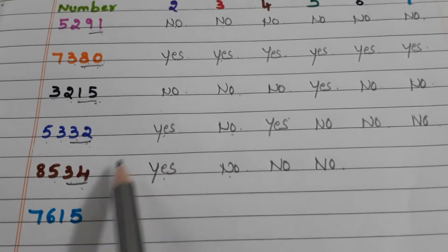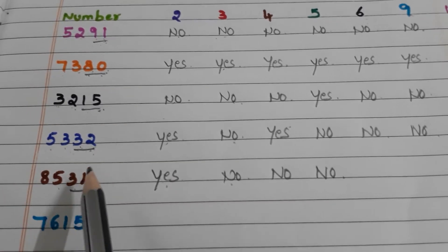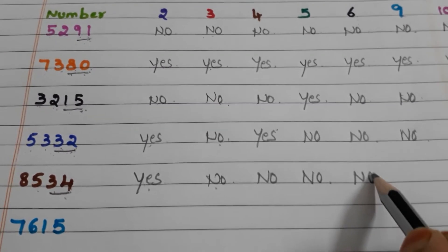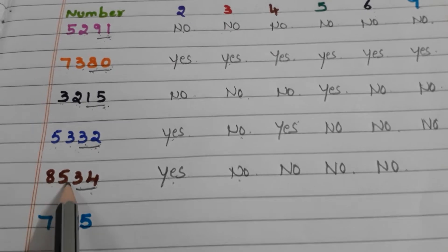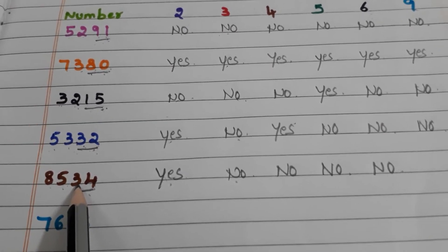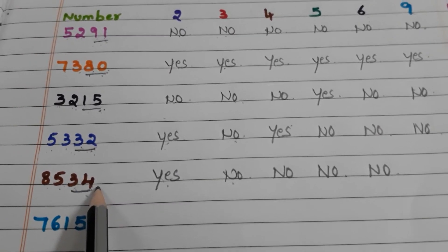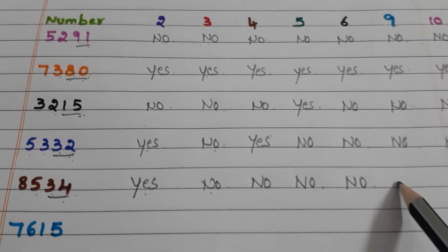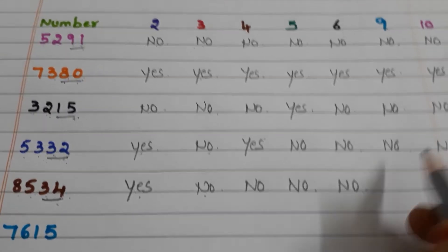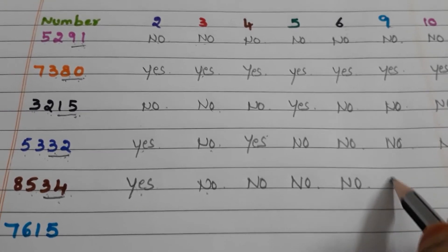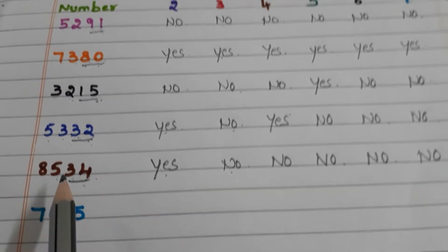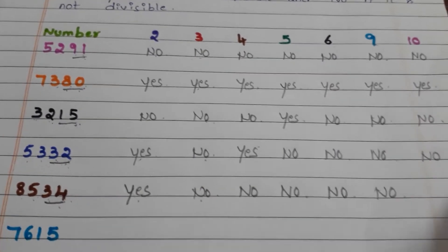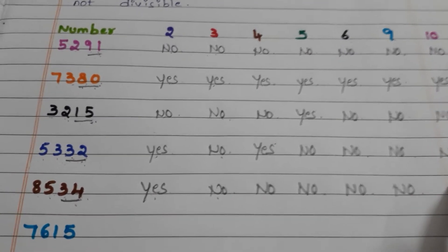What about 6? This number is divisible by 2 but not divisible by 3, so the number is not divisible by 6 — write no. What about 9? 8 plus 5 is 13, 13 plus 3 is 16, 16 plus 4 is 20. 20 is not a multiple of 9, so it is not divisible by 9 — write no. What about 10? In the units place 4 is there, so it is not divisible by 10 — write no.